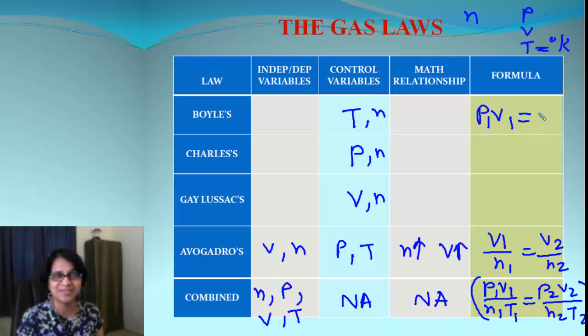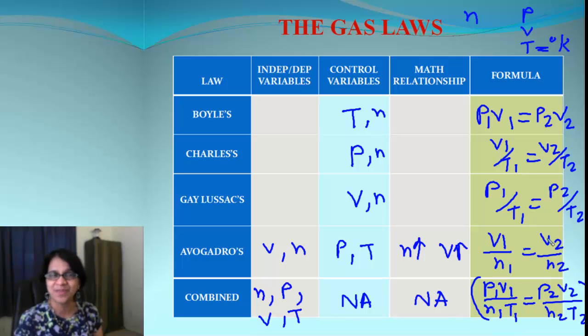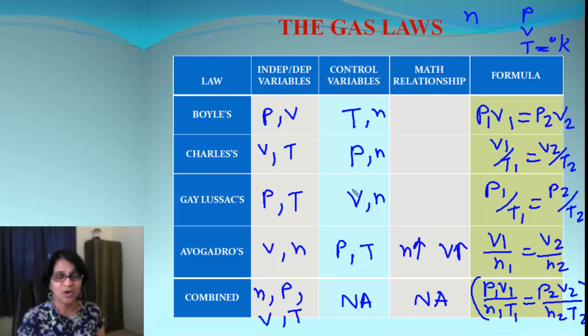Which is here, P1V1 equals P2V2 for Boyle's. Then, we have V1 over T1 equals V2 over T2 for Charles's. And for Gay-Lussac's, we get P1 over T1 equals P2 over T2. So which one is the variable? The variables in this case will be P and V. This will be V and T. And this will be P and T.